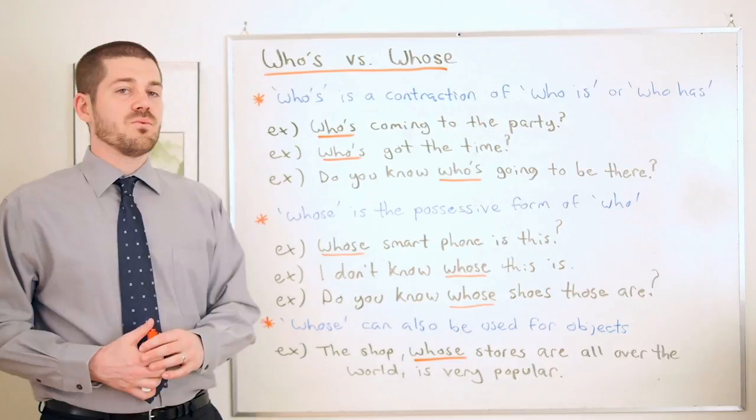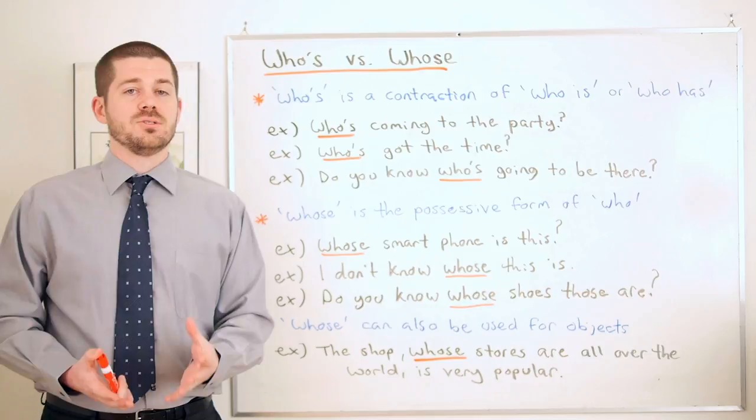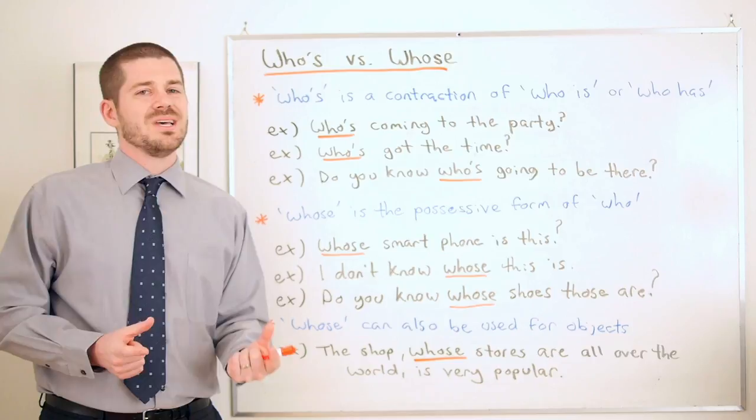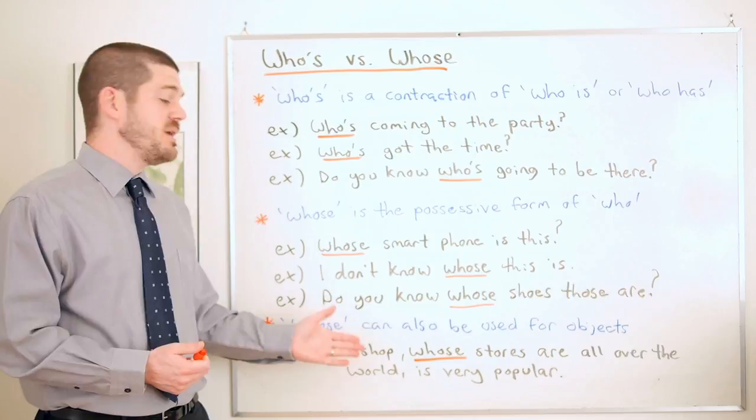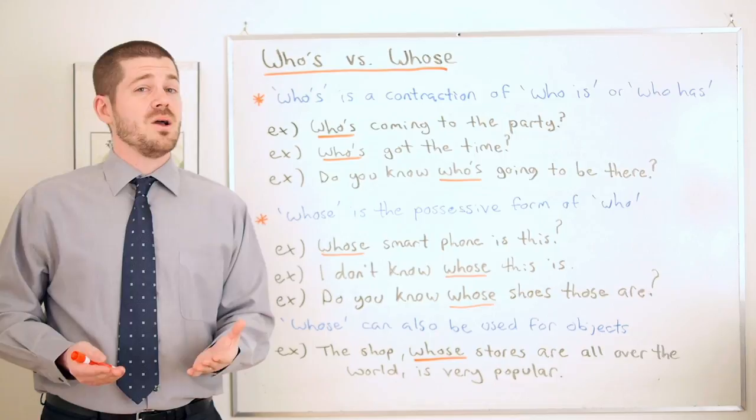In this case if we think about that, we might write this sentence as the shop which has stores all over the world is popular. So in that case whose is kind of replacing which, but in this case it must be for an object, it cannot be for a person.